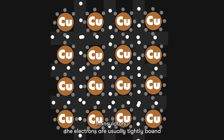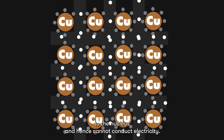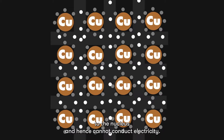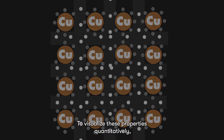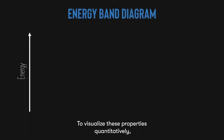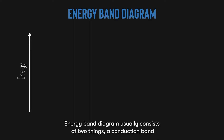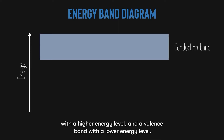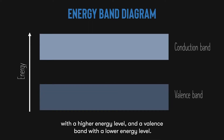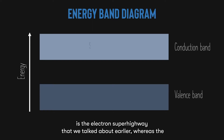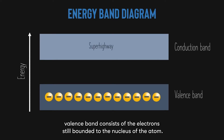In insulators, the electrons are usually tightly bound to the nucleus and hence cannot conduct electricity. To visualize these properties quantitatively, we often represent them via something called the energy band diagram. The energy band diagram usually consists of two things: a conduction band with a higher energy level, and a valence band with a lower energy level. The conduction band is the electron superhighway that we talked about earlier, whereas the valence band consists of the electrons still bounded to the nucleus of the atom.